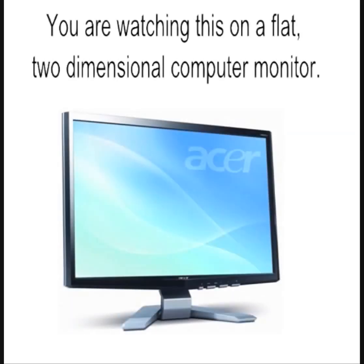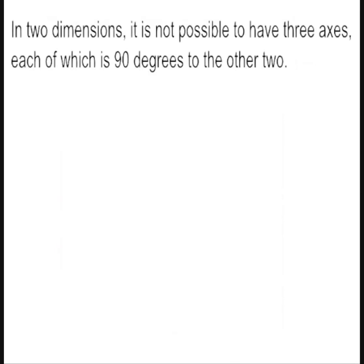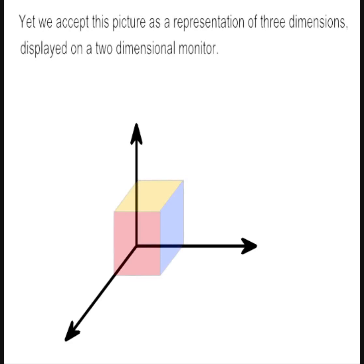You are watching this on a flat, two-dimensional computer monitor. In two dimensions, it is not possible to have three axes, each of which is 90 degrees to the other two. Yet we accept this picture as a representation of three dimensions.